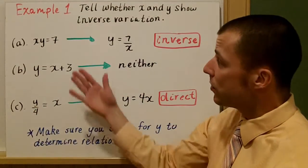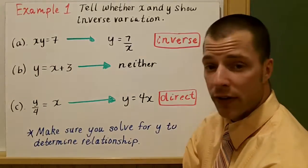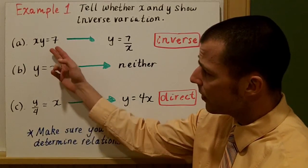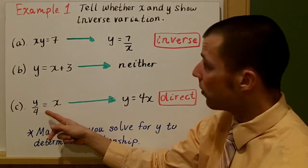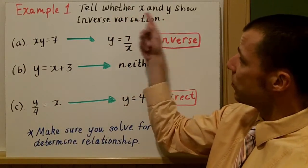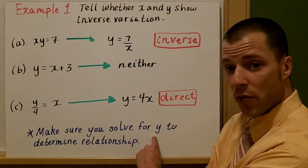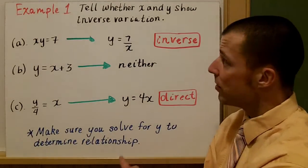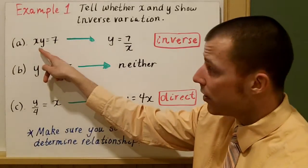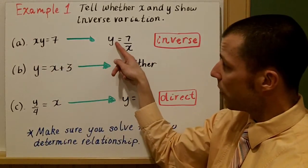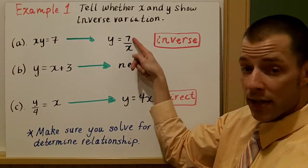In example one, we're going to try to identify whether or not an equation is in inverse variation form. We have three examples: x times y equals 7, y equals x plus 3, and y over 4 equals x. The key thing is to solve your equation for y. In the first example, dividing each side by x gives y equals 7 over x — that's our inverse relationship, where a is 7.